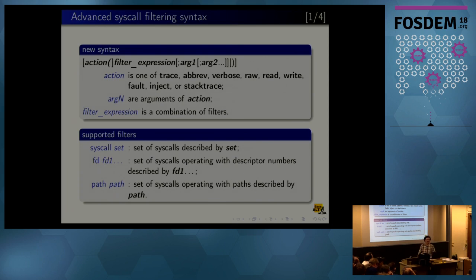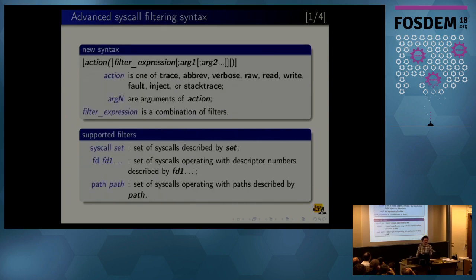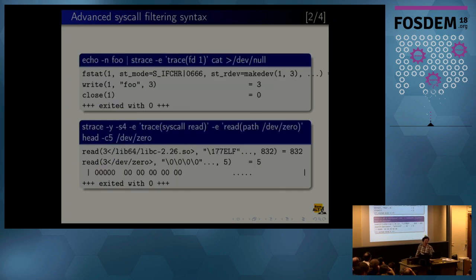Okay, the last topic is advanced syscall filtering syntax. This was implemented also as part of a Google Summer of Code project last year and it allows even more flexible specification of syscalls. For example, you can trace by file descriptor number. With traditional syntax you can just either trace by specification as you could see before, or you can dump by file descriptor number. Now you can combine all these things. You can combine actions, default action is trace, you don't have to specify it. It's written here trace but you can omit it as you can see on following slides.